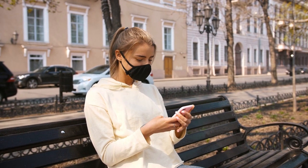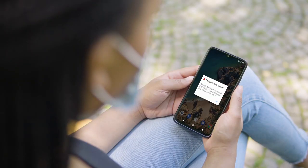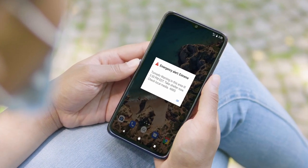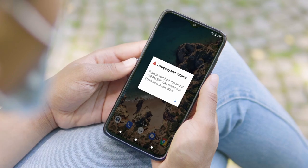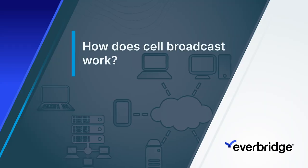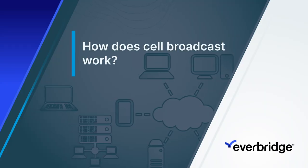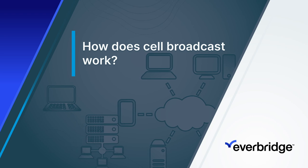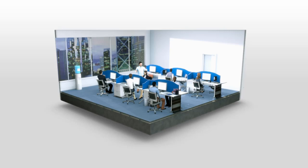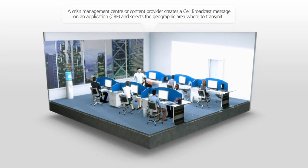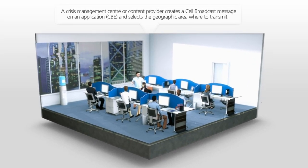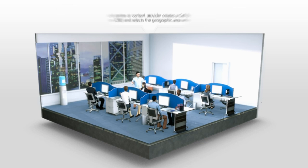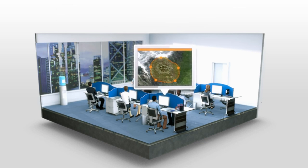We will explain how cell broadcast works with an example of a mobile phone receiving a message with the unique alert tone. Firstly, let's look at the technology behind cell broadcast and illustrate how it works. Public warning alerts are issued by competent authorities, usually operating within a crisis management centre. A crisis management centre, or content provider, creates a cell broadcast message on an application and selects a geographical area to transmit to.